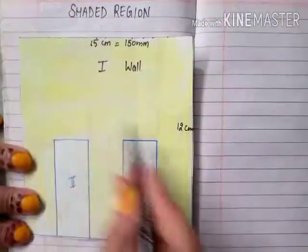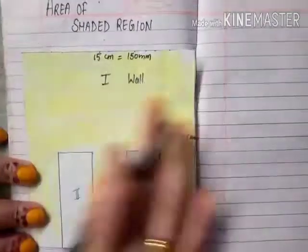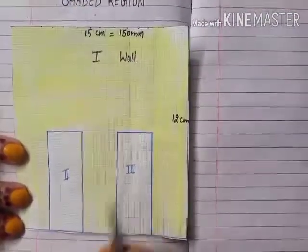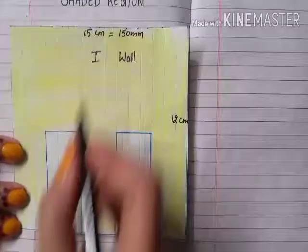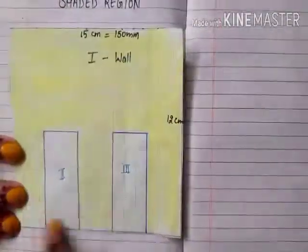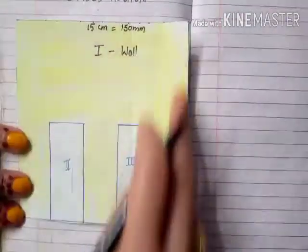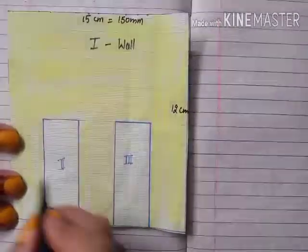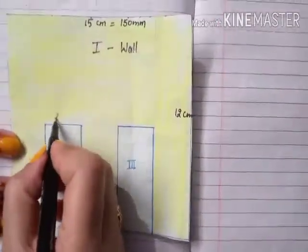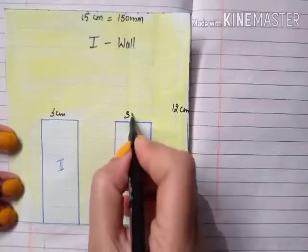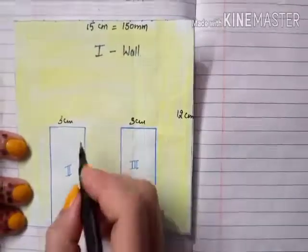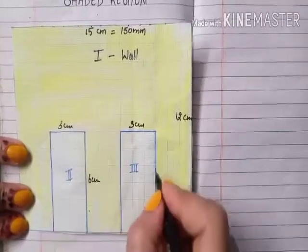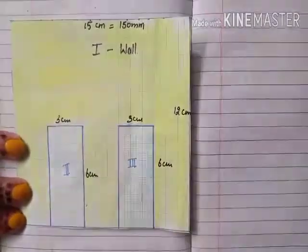We have to find out the area of the yellow portion — the painted area. I have taken this as one full wall. These are the two doors. Door one is 3 centimeters wide, door two is also 3 centimeters wide, and the height of each door is 6 centimeters.